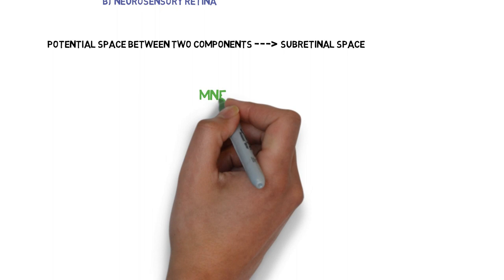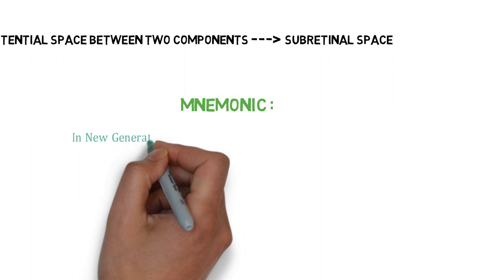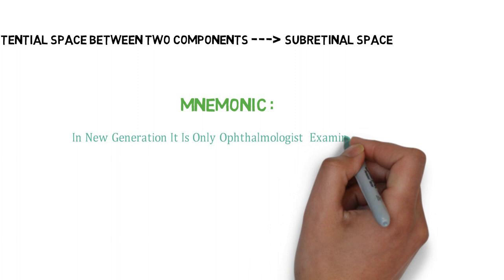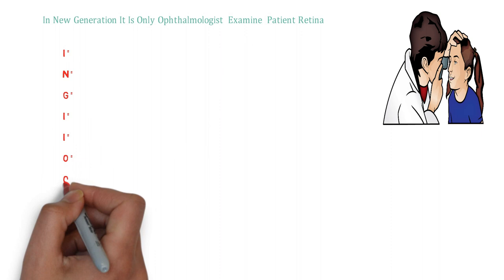We have a simple mnemonic for the 10 layers: 'In New Generation, It Is Only Ophthalmologist Examine Patient's Retina.' The first letter 'I' stands for the inner limiting membrane, 'N' for the nerve fiber layer, and 'G' for the ganglion cell layer. The next 'I' stands for the inner plexiform layer.